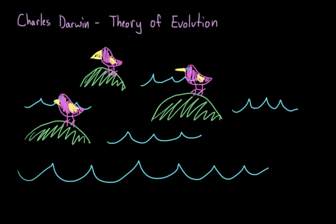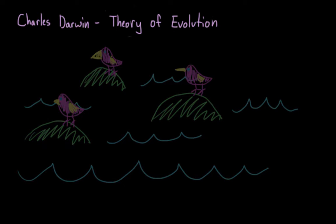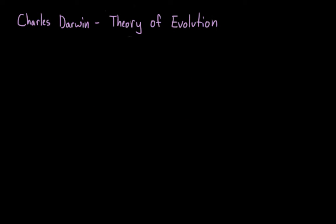And he theorized that this occurred because of interactions between the organisms and their environments. That the animals who are best suited for living in certain environments would have the greatest likelihood of both surviving in that environment as well as passing on their genes.